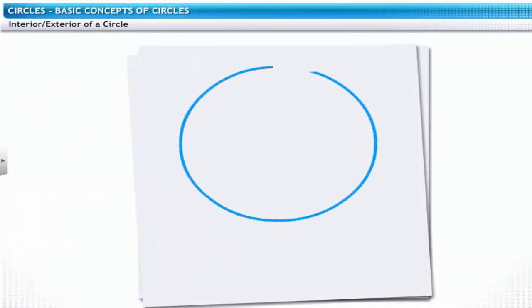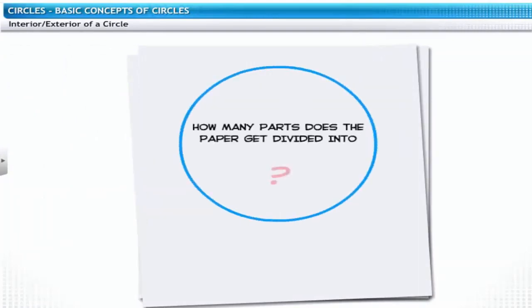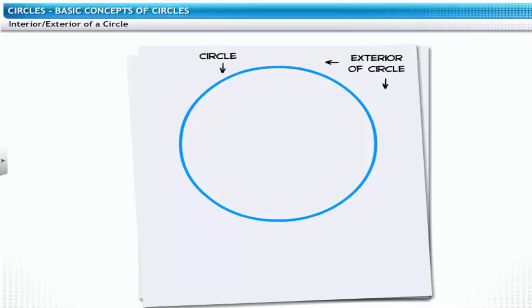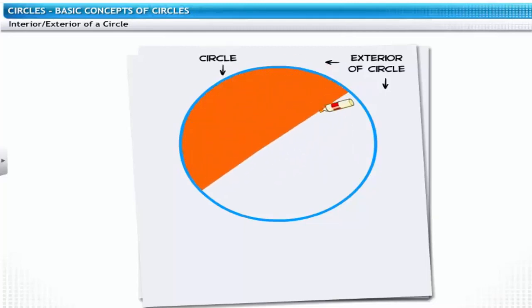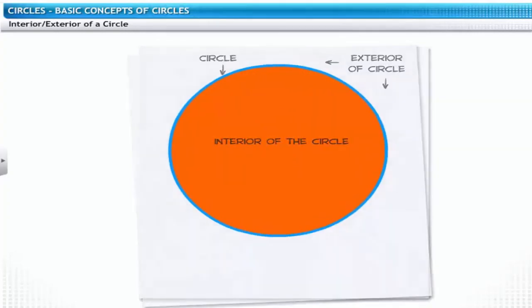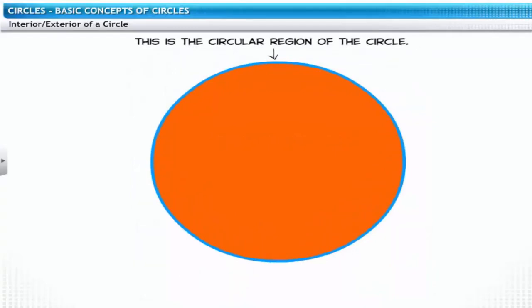Let's draw a circle on this piece of paper. How many parts does the paper get divided into? A circle divides the paper into three parts: the area outside the circle, that is the exterior of the circle; the circle itself; and the area inside the circle, that is the interior of the circle.